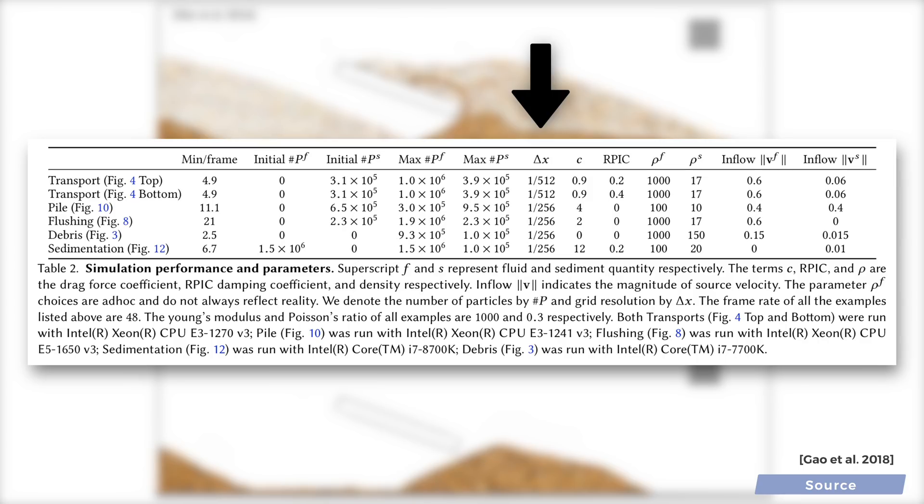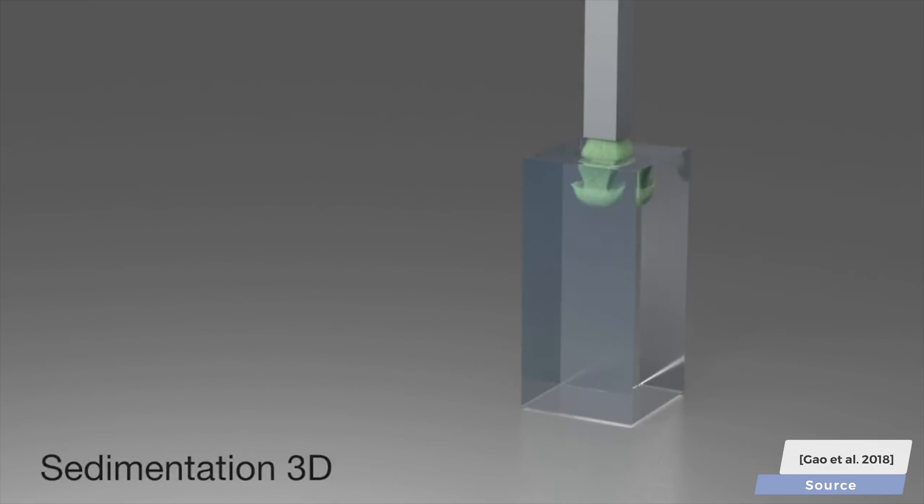Now, since these grids are often used for 3D simulations, we need to raise the 256 and the 512 to the third power, and with that, we get a simulation grid with up to hundreds of millions of points, and we haven't even talked about the particle representation yet.